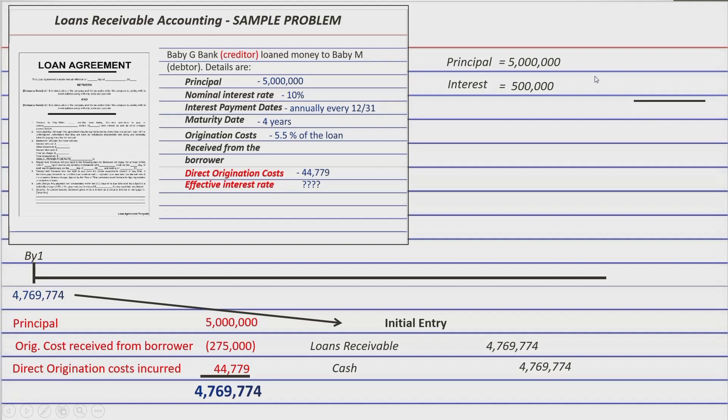So how do we do that? Of course, by means of multiplying it with 1 plus i raised to the power of negative 4 for the principal and 1 minus 1 plus i raised to the power of negative 4 over i for the interest. Now in this problem, the present value is already given. And again, that's 4,769,774. So the ones missing is the effective rate. So this i here in this formulas.